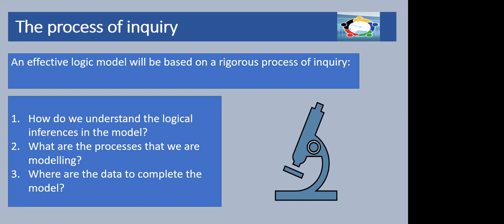So we want to ensure that we understand those logical inferences and be very clear about the processes that we are modelling. In the example of the Summer Youth Club, the processes are quite simple: you've got some funding, you recruit some staff, you recruit some young people, you deliver interventions, and those activities will bring about the outcomes you want to achieve. And then finally, an effective logic model has to identify where the data are going to be sourced to complete the model — in evaluation, particularly quantitative outcome evaluation, we do need data to demonstrate that we've met these outcomes.